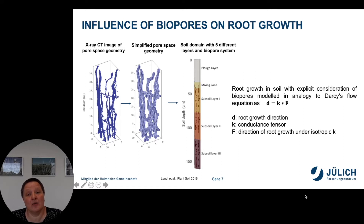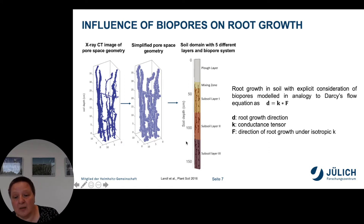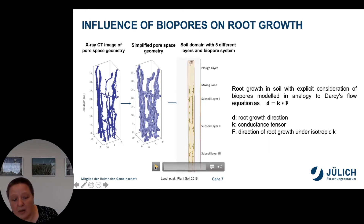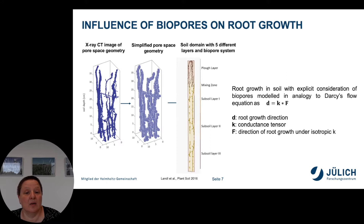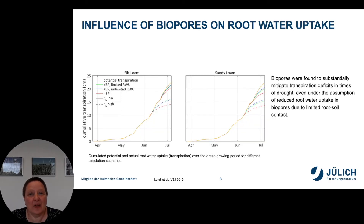The root growth was simulated by explicitly considering the biopores, and we modeled it in analogy to Darcy's flow equation: the direction of root growth is determined by a direction under isotropic conductance and a conductance tensor which determines anisotropy due to biopores. The root architecture growth model was then coupled to a soil water flow model and root water uptake was computed.